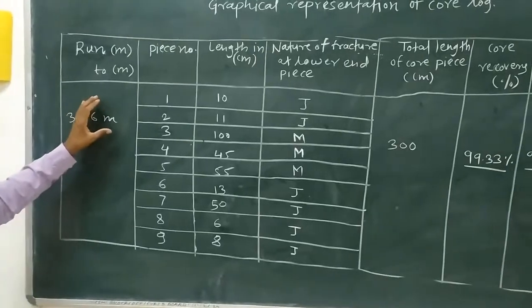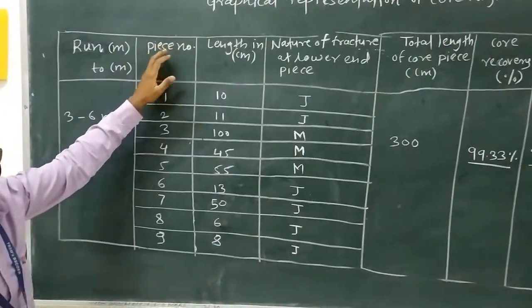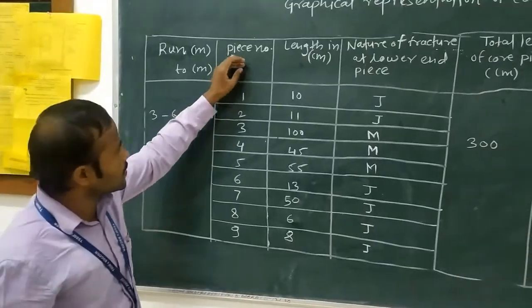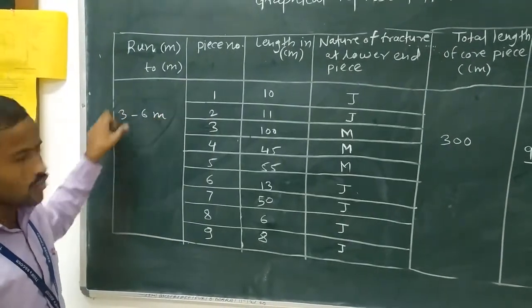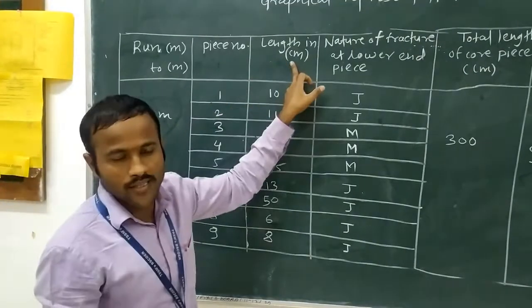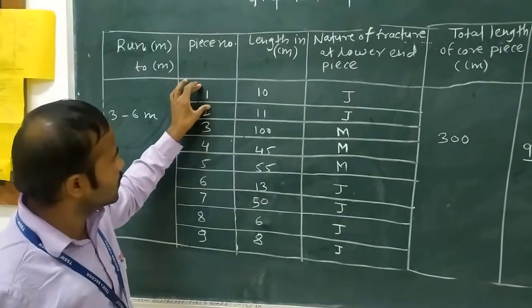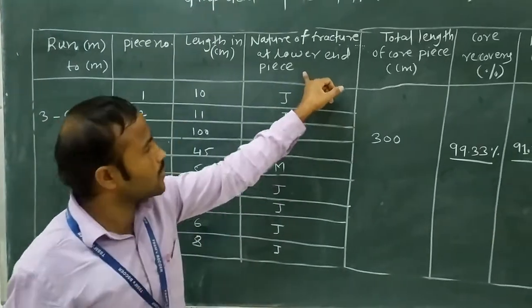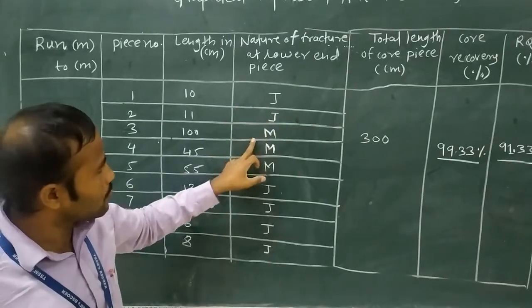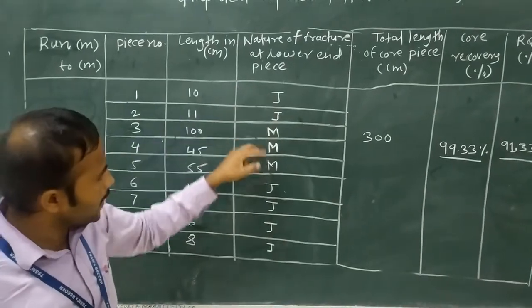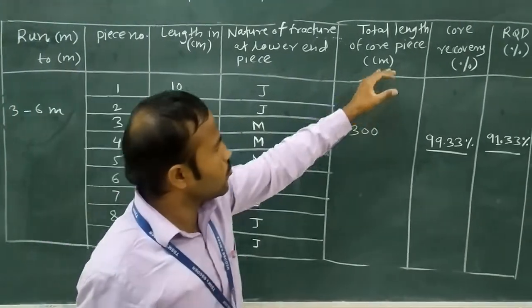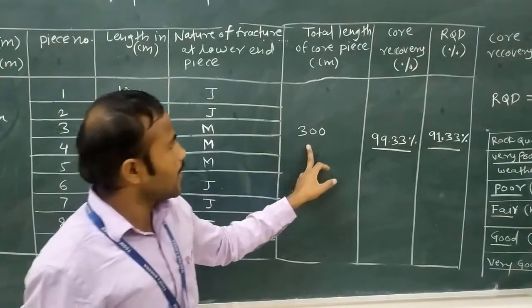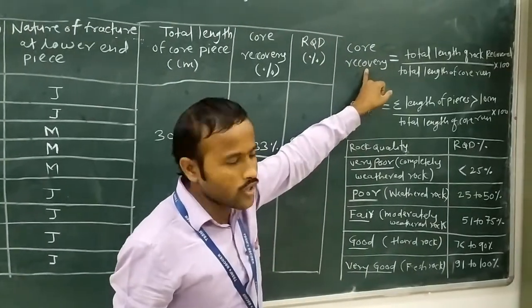After preserving the core sample in the wooden box, we measure the length of each piece. The actual length of the core run is 3 to 6 meters. These are the number of pieces obtained from the drilling, and here are the lengths of those pieces — for example, piece number 1 has a length in centimeters. The third column represents the nature of fracture at the lower end of the pieces: J stands for joints, and M stands for mechanical fracture. After recording all pieces, we calculate the total length of the core pieces.